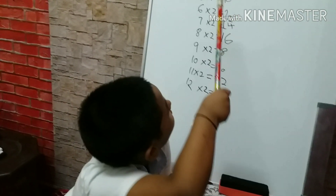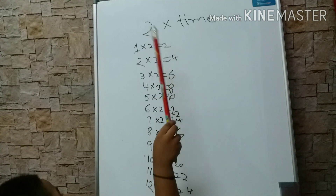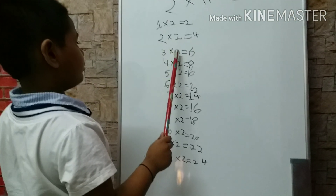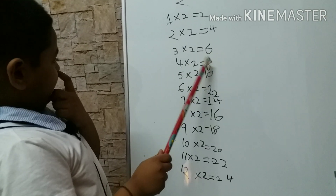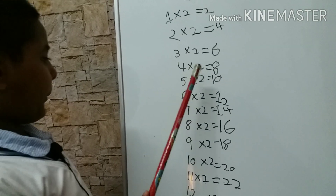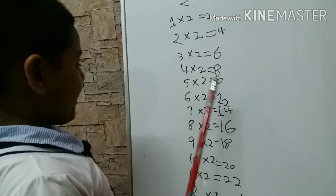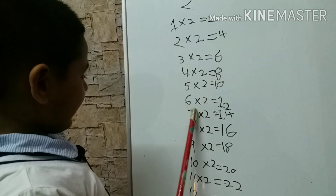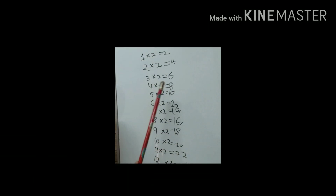One times two, two. Two times two, four. Three times two, six. Four times two, eight. Five times two, ten. Six times two, twelve. Seven times two — eight, five times two.